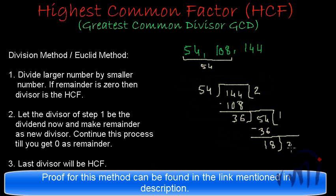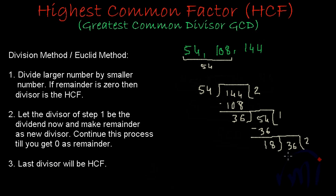And now this 18 will become the divisor and 36 will become the dividend and 18 to the 36. So from here we have found the HCF of 54 and 144 is 18. That means the HCF of 54, 108 and 144 is 18.